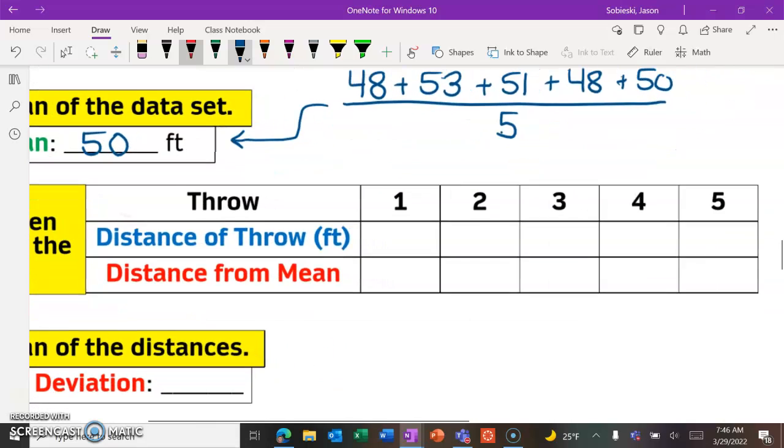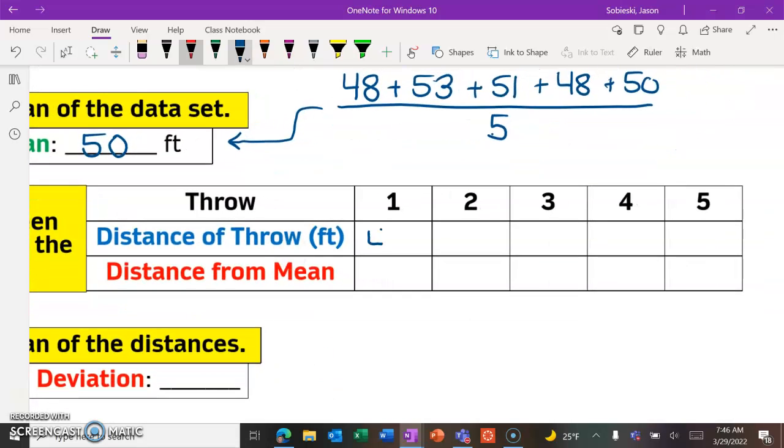So we go back to our table, and we're going to figure out how far all of her throws, so 48, 53, 51, 48, and 50, are from the mean, which was 50.